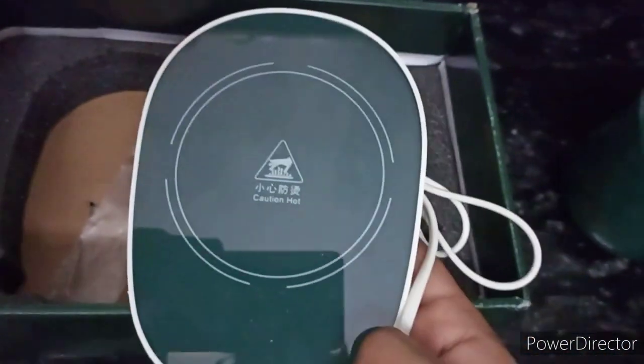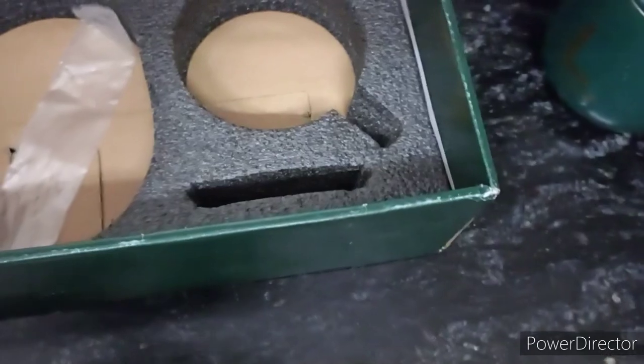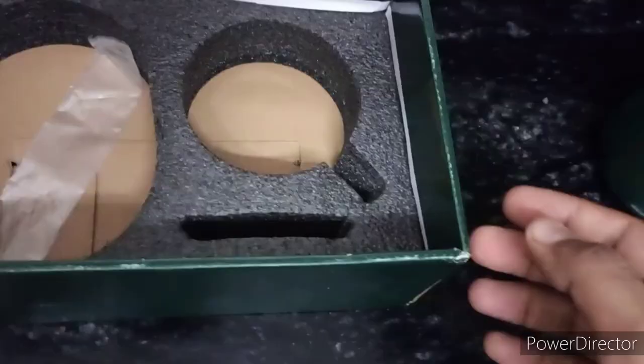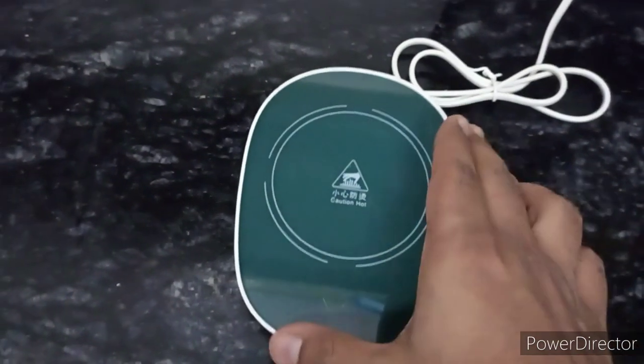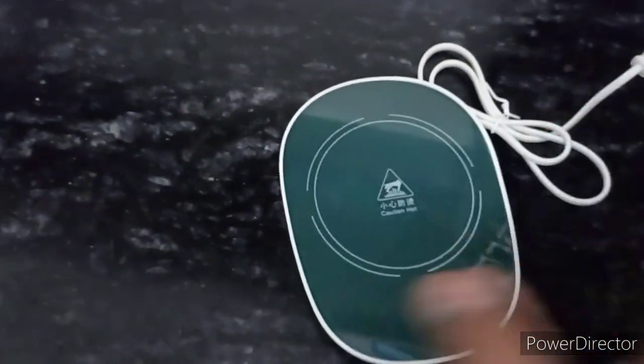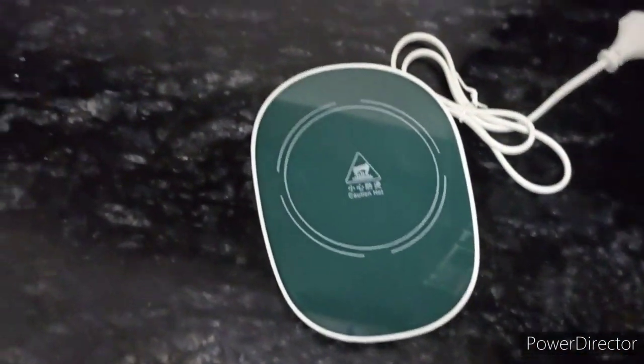You will get a coaster and a heating pad which you can put under the cup. Basically it looks like this. You have to keep the pad here.